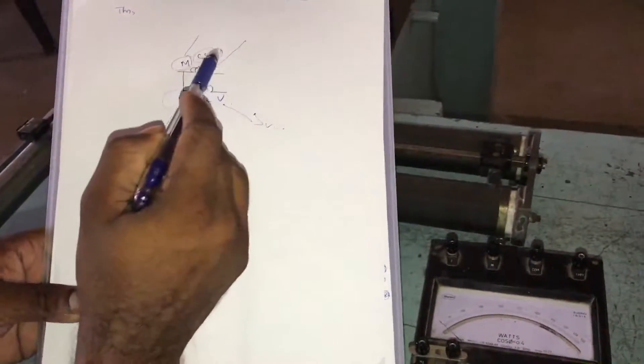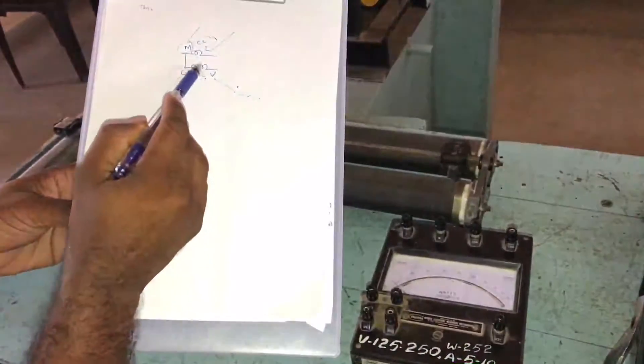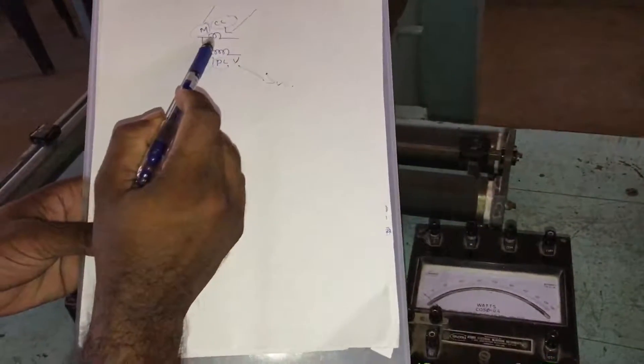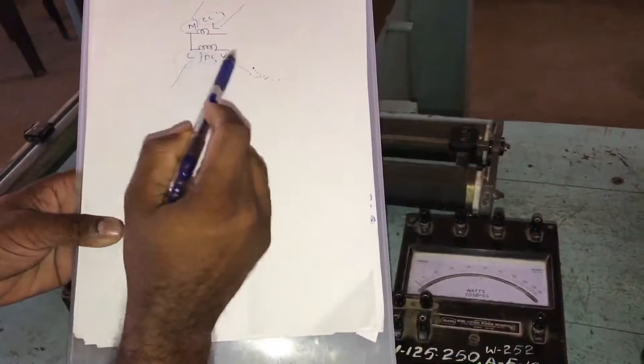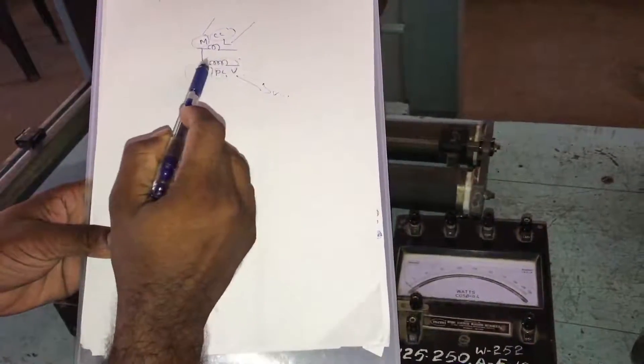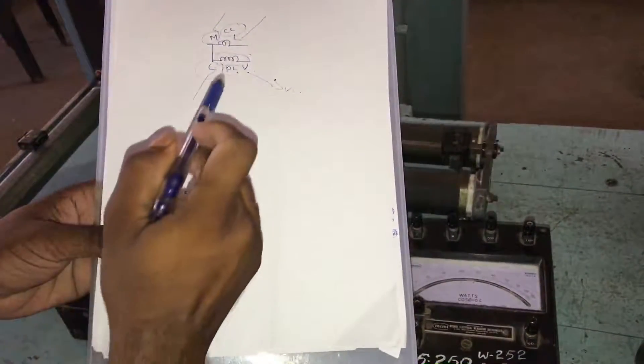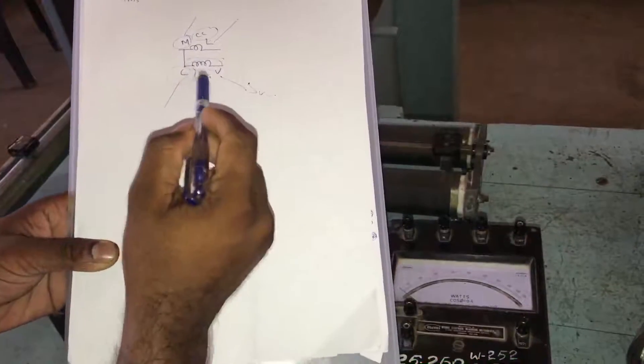The current coil is indicated as CC and the pressure coil as PC. The current coil has few turns and thick wire. The pressure coil has a large number of turns, high resistance, and thin wire.